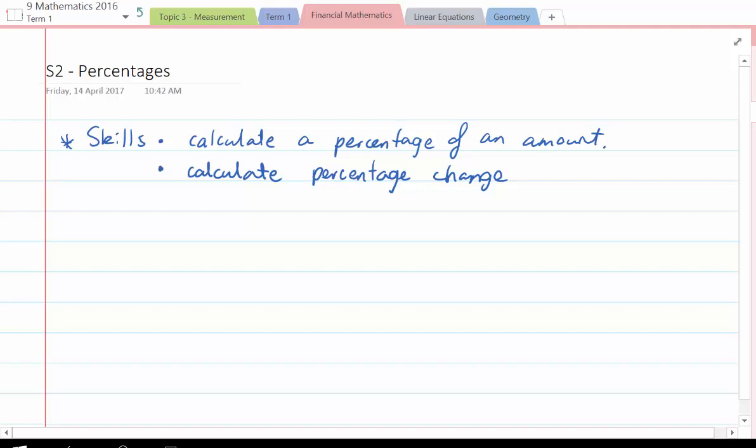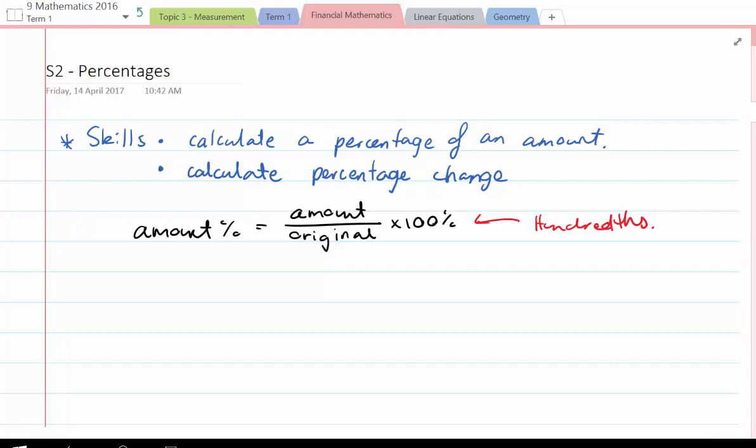If we want to find the percentage of an amount, then what we need is the amount over the original amount and then multiplied by 100%. This is because a percentage is simply a representation of a decimal or fraction as hundredths. So this allows it to be viewed as hundredths.